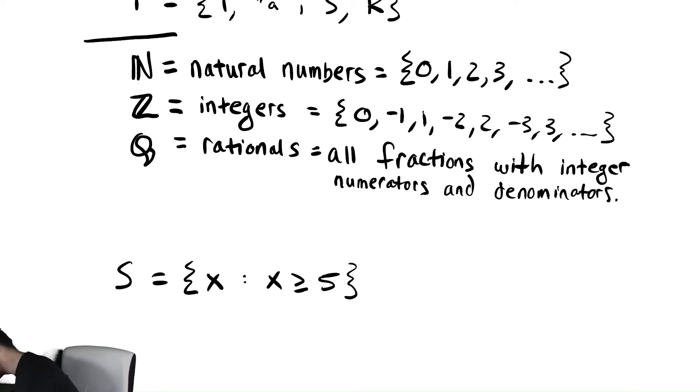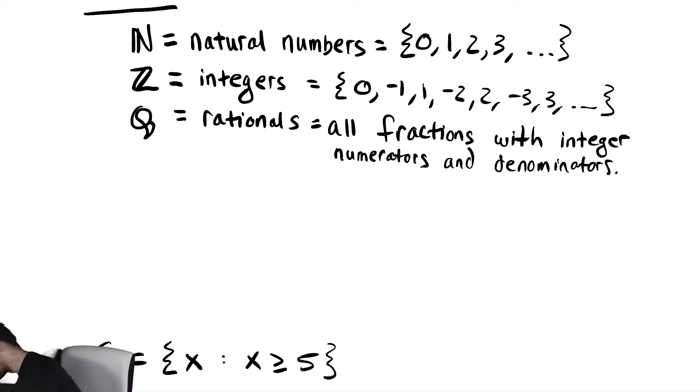We might do that later. Let's see. Our last two sets. Well, our last three sets are going to be the real numbers, R. This is difficult to define without getting into a lot of analysis. In general, this includes things like pi, E, the golden ratio phi,